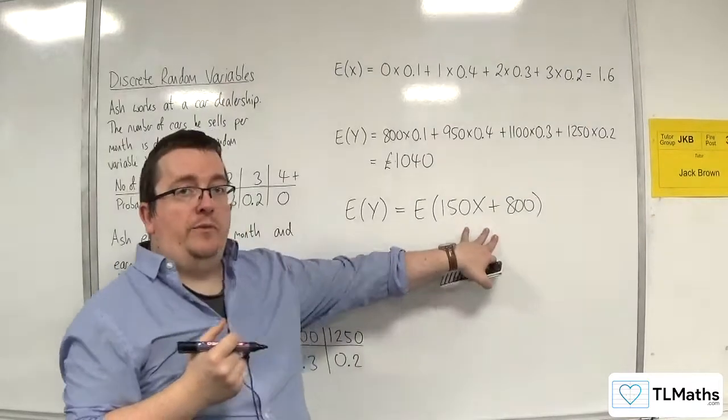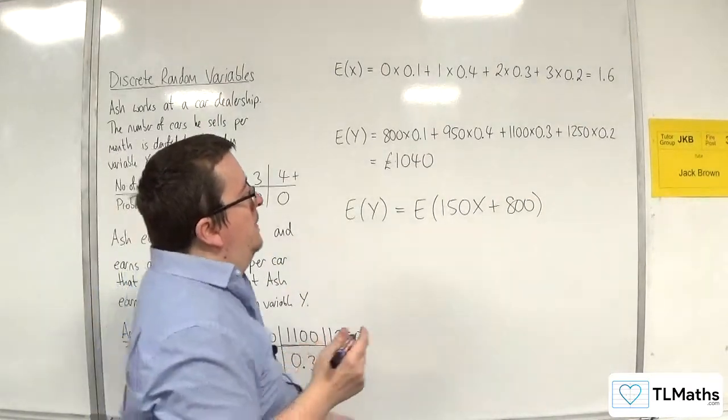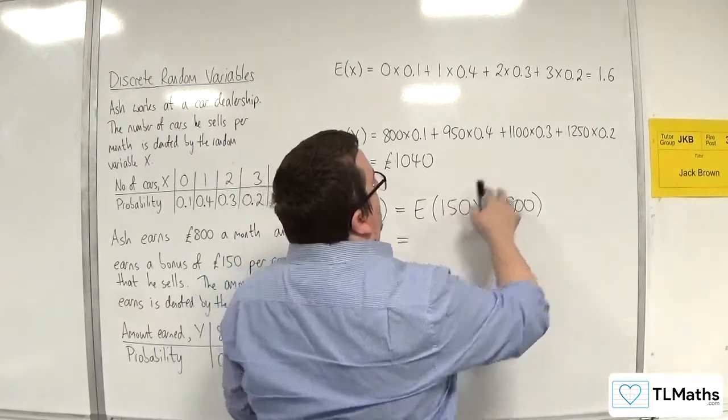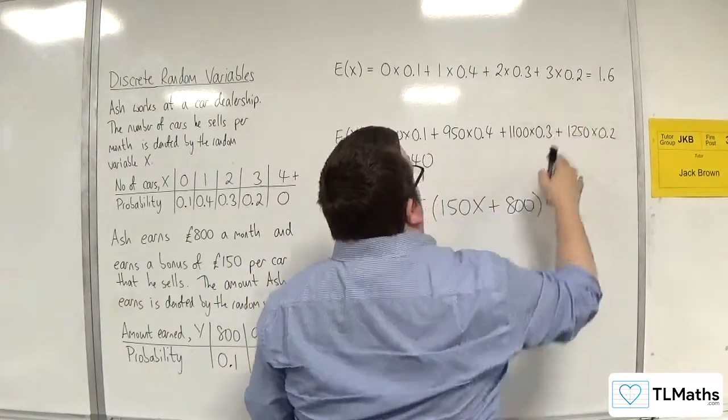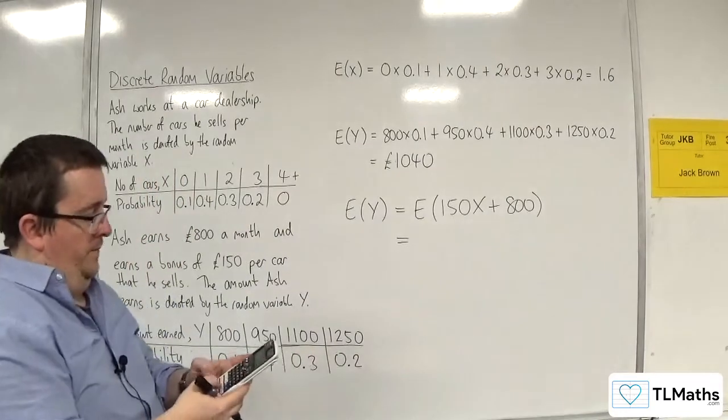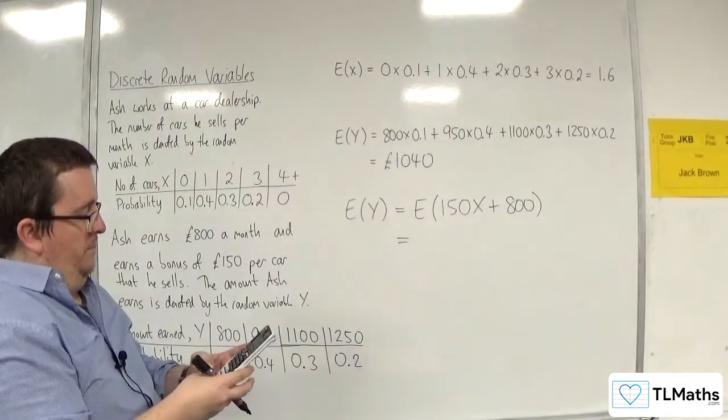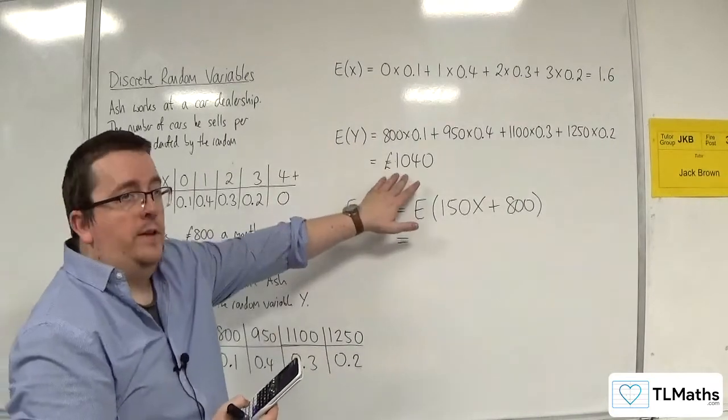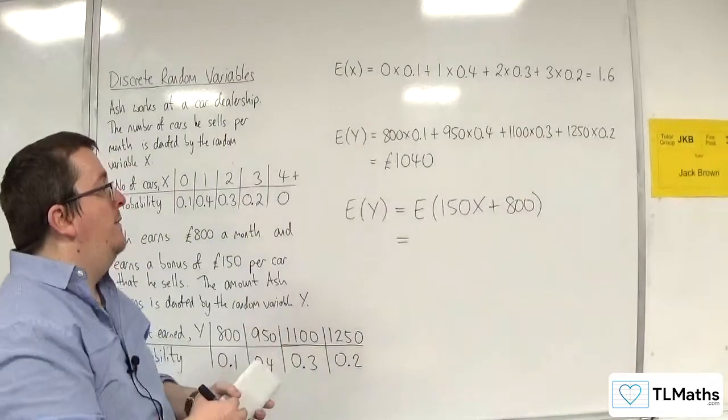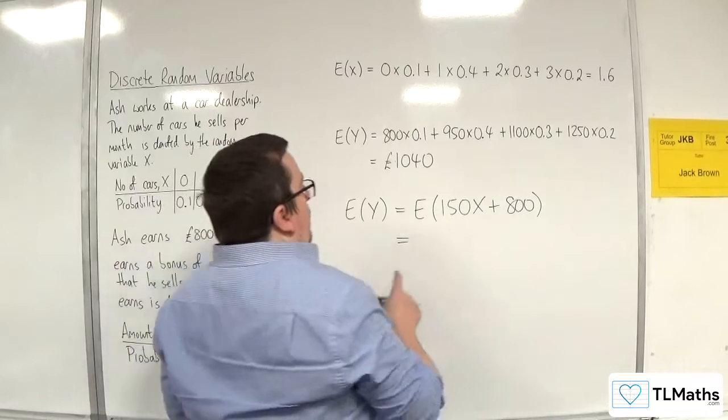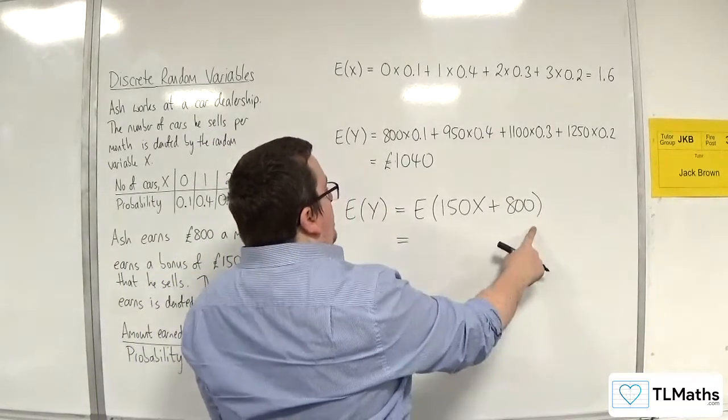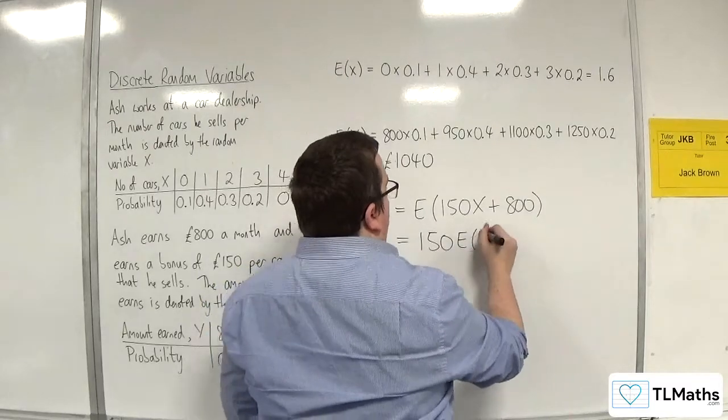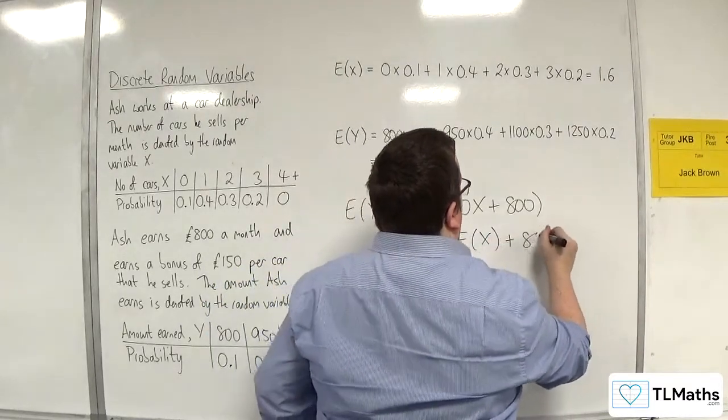OK. So, E of Y is the same as that. Now, if you do 150 times the 1.6 and then add on the 800, you actually get 1040, precisely the same thing that you have there. So, what we've found is that that is precisely the same as 150 E of X plus 800.